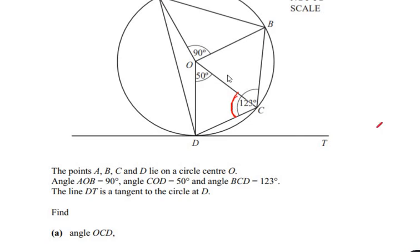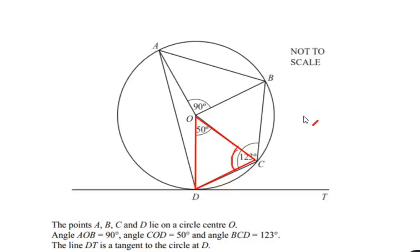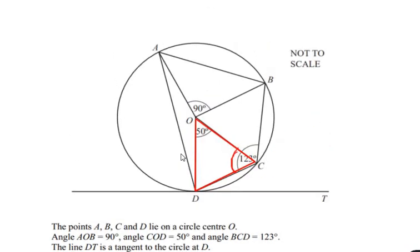Let us consider the triangle OCD. We can see that the triangle OCD is acting as an isosceles triangle because the sides OD and OC are the radius of the same circle. Since the sides are the same, the two angles — angle C and angle D — are going to be equal. So let us consider angle C as x and angle D as x.